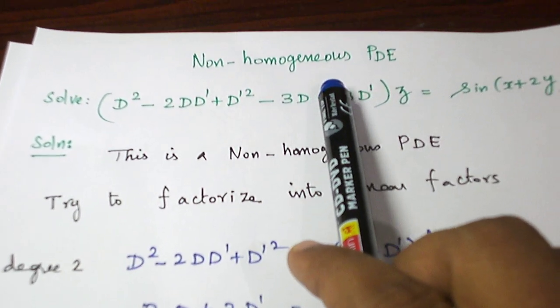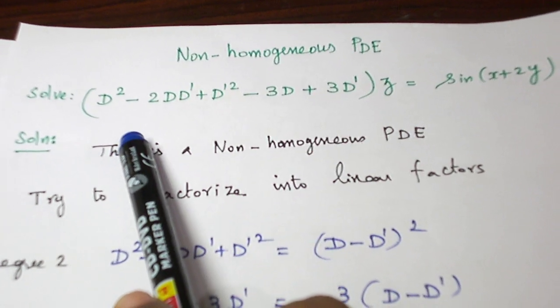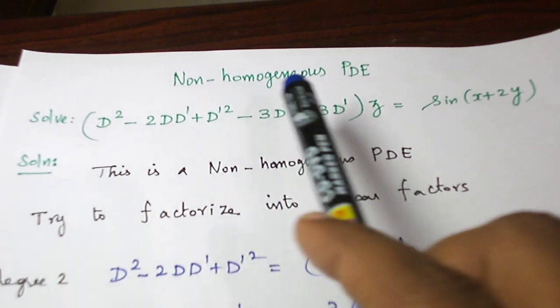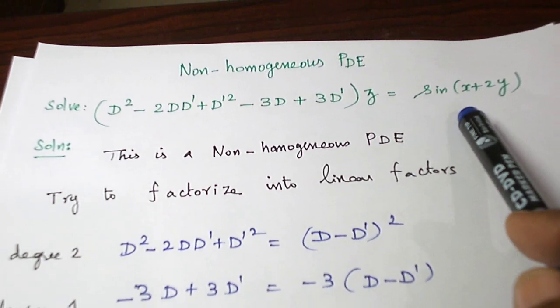Hello students, today let us see a problem from the topic non-homogeneous partial differential equation. This is the problem given. Solve d square minus 2d dash plus d dash square minus 3d plus 3d dash of z is equal to sin of x plus 2y.